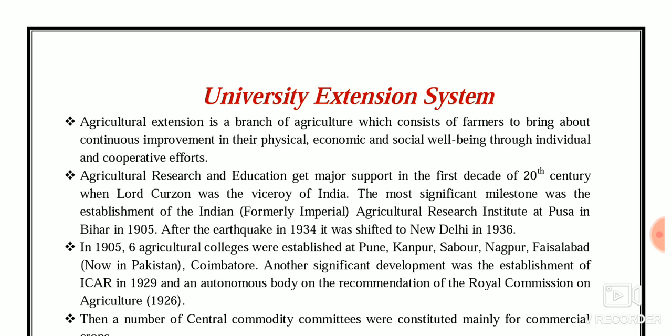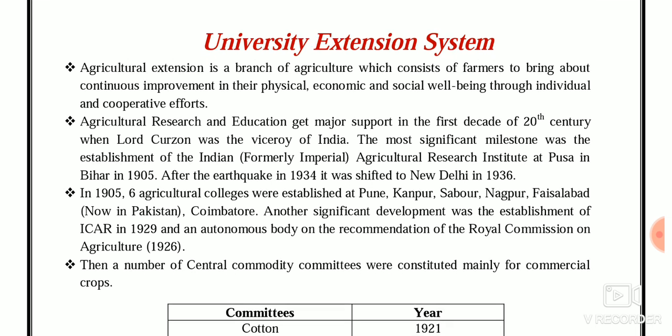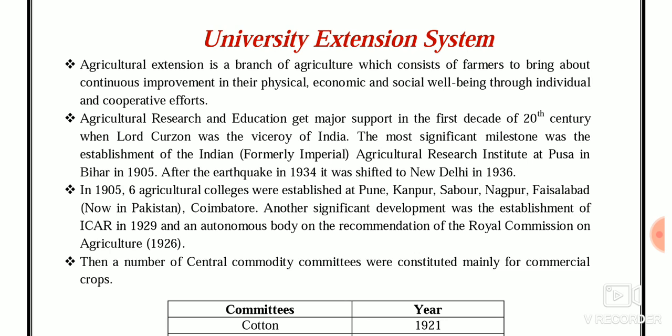Before knowing this, we should know what is agriculture extension. Agriculture extension is the branch of agriculture which deals with the farmers' improvement in their physical, economic and social well-being through individual and cooperative efforts. To improve the farmers, we have to improve their socio-economic status by means of individual and cooperative efforts.